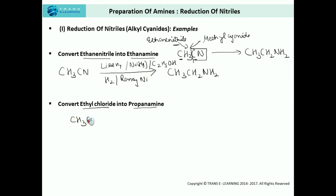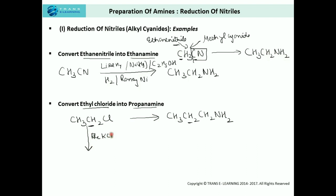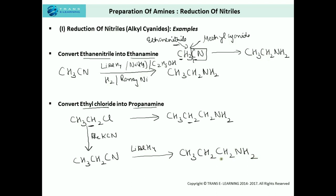Next, convert ethane chloride into propane amine. Ethane chloride is CH₃CH₂Cl and propane amine is CH₃CH₂CH₂NH₂. We have no direct method of converting an alkyl halide into an amine, so first we convert it into a nitrile by introducing the cyanide group using alcoholic potassium cyanide, giving propane nitrile: CH₃CH₂CN. Then using a reducing agent like lithium aluminium hydride, we convert it into propane amine: CH₃CH₂CH₂NH₂. This propane amine has one more carbon atom in the chain compared to the parent cyanide.